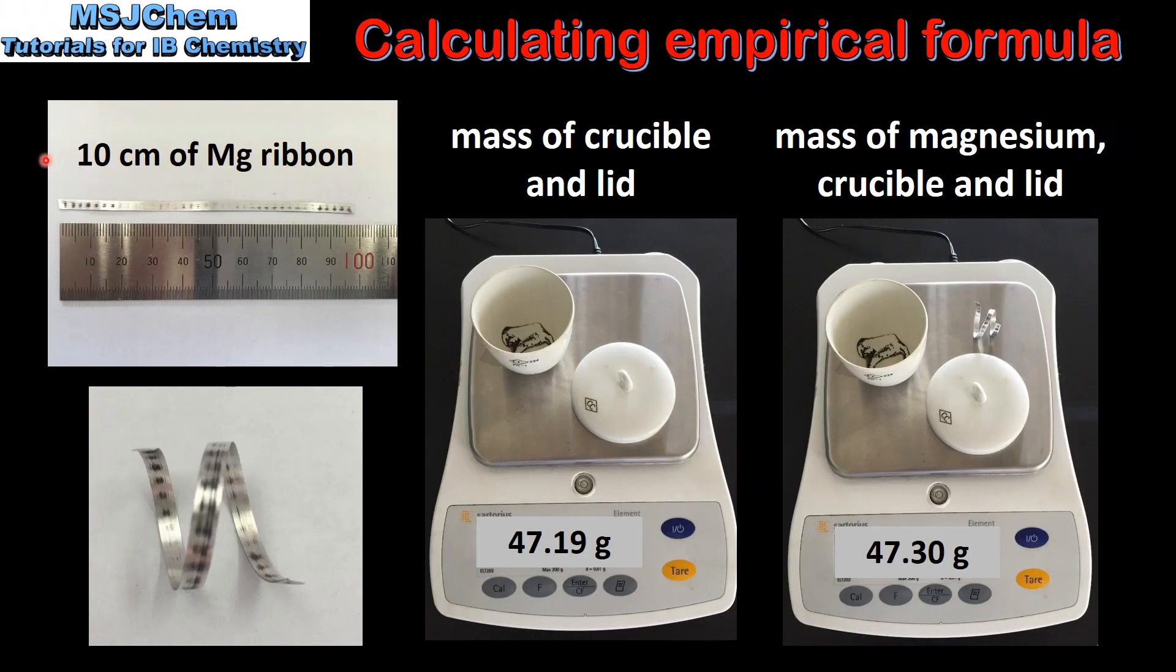We start the experiment by measuring 10 cm of magnesium ribbon. Next, the magnesium ribbon is wrapped around a pencil to form a coil.